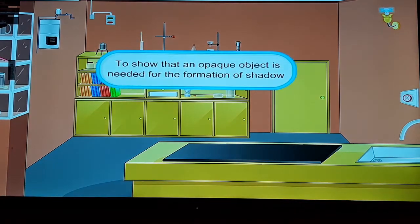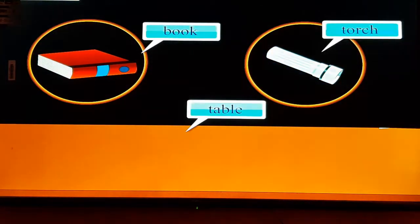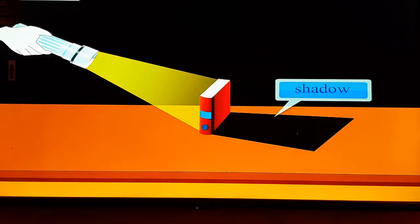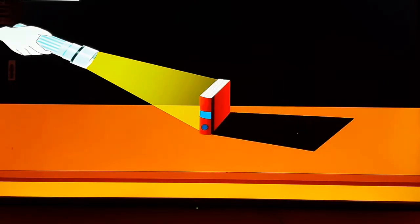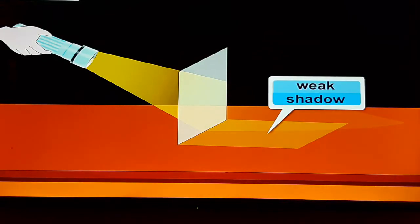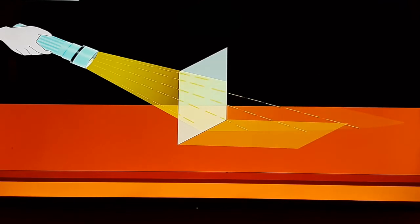Activity 4: to show that an opaque object is needed to form a shadow. Things needed: book, torch, table. Method: shine a torch on a table — can you see a shadow? No. Place a book between the torch and the table — now we can see a shadow, since the book is opaque and stops light. If we place butter paper (a translucent object) in place of the book, we get a weak shadow. A transparent object does not stop any light. Conclusion: the second essential condition for a shadow is the presence of an opaque object in the path of light.